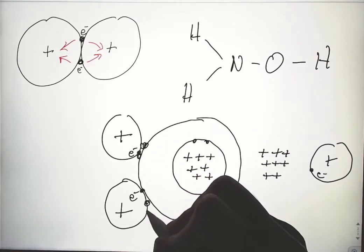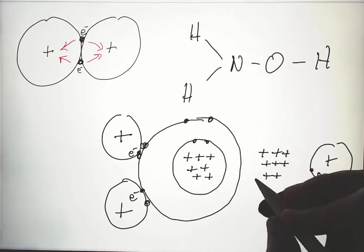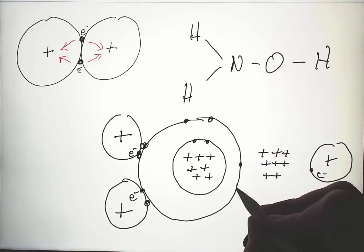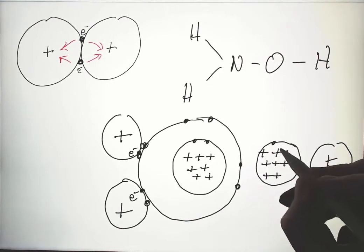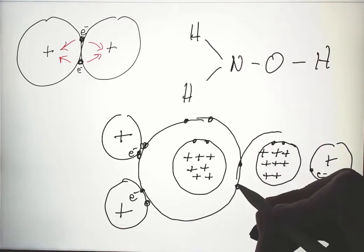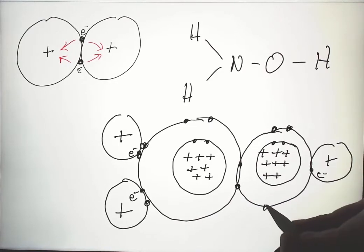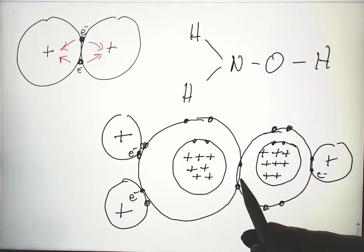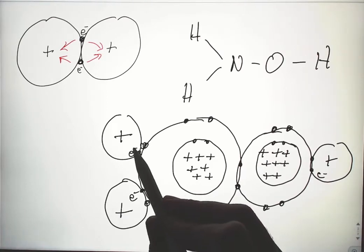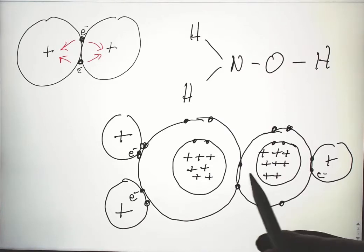Nitrogen has two additional electrons and can share two electrons with the oxygen. The oxygen has an innermost 1s shell and an outermost shell with electrons. So nitrogen has three single bonds — with hydrogen, hydrogen, and oxygen. The oxygen has two bonds — with the hydrogen and the nitrogen.